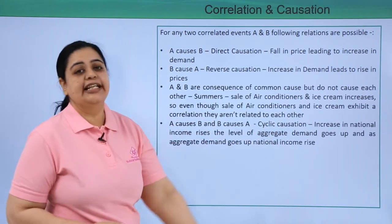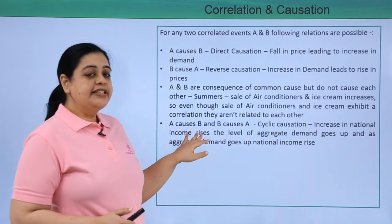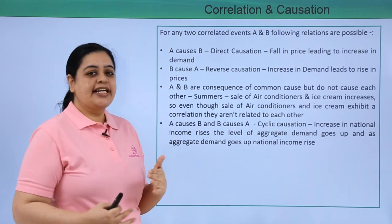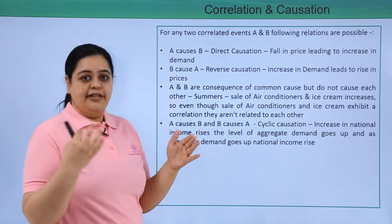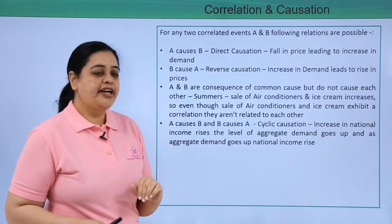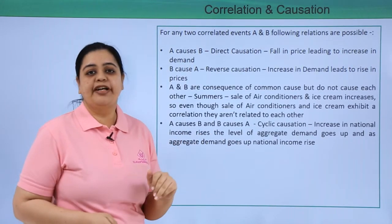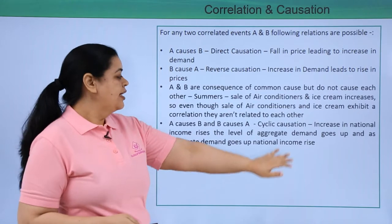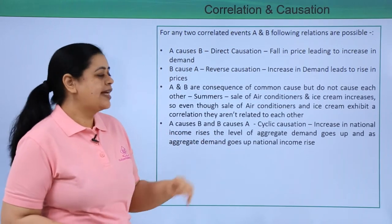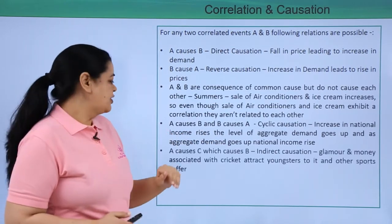Then comes A causes B and B causes A — this is cyclical causation. When there is an increase in national income, the level of aggregate demand will go up. And because the level of aggregate demand goes up, the national income would rise. That is an example of cyclical causation.